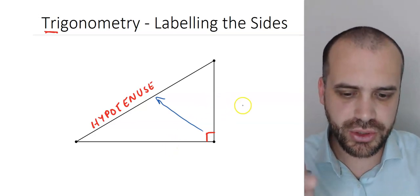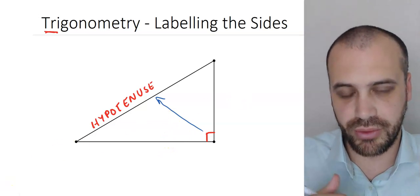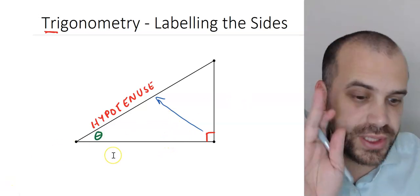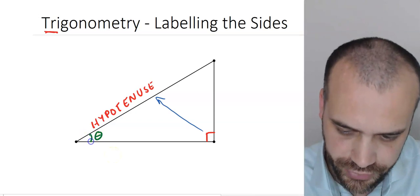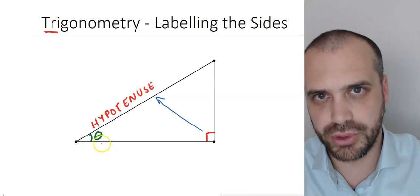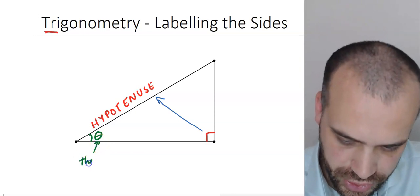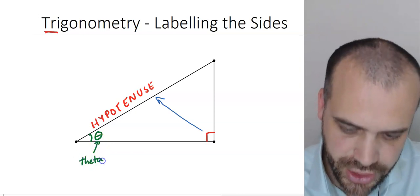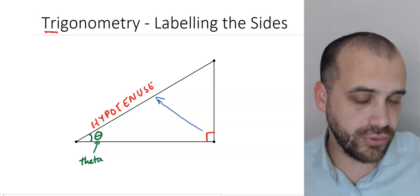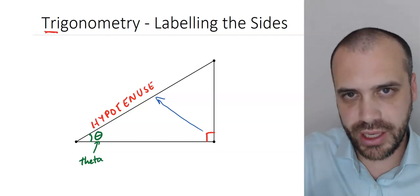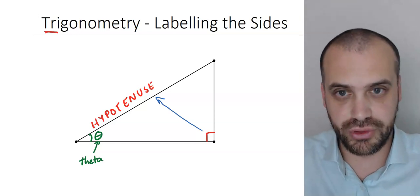Before labeling the other two sides, it's important that we talk about the angle of interest. For this particular triangle I'm going to call this one the angle of interest and use this symbol to represent it. That's a Greek letter called theta, and you're going to talk about theta a lot. The way we label the other two sides depends on where our angle of interest is.